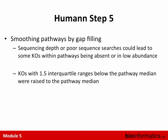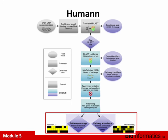HUMAnN then does smoothing and gap filling, recognizing that metagenomics sequencing depth is usually too shallow to sample all genes — so just because a gene is missing from a pathway doesn't mean it's absent from the metagenome. They increase KO counts for orthologs they believe are present but just not sequenced. Finally, HUMAnN outputs two data types: pathway coverage, a presence/absence indicator of whether a pathway is at least fully covered, and pathway abundance, which reflects relative abundance — much more informative and what you'd typically use for analysis.